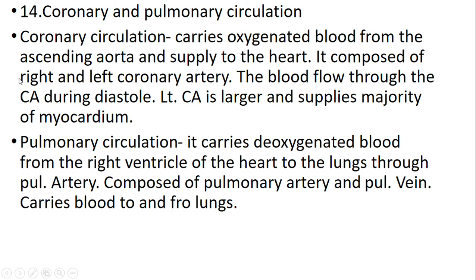Fourteenth question: coronary and pulmonary circulation. Coronary circulation carries oxygenated blood from the ascending aorta to supply the heart. It is composed of right and left coronary arteries. Blood flows through the coronary arteries during diastole. The left coronary artery is large and supplies the majority of the myocardium. Pulmonary circulation carries deoxygenated blood from the right ventricle to the lungs through the pulmonary artery. It is composed of pulmonary arteries and pulmonary veins, which carry blood to and from the lungs. Thank you for listening.